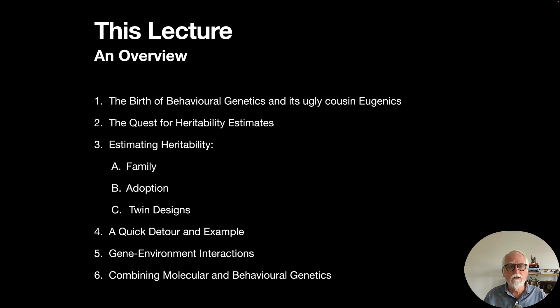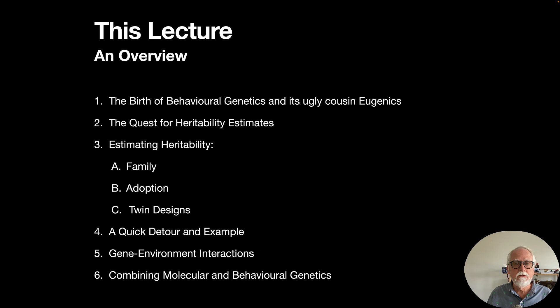In summary, this lecture covered the birth of behavioral genetics and its ugly cousin eugenics, heritability estimates, and the family, adoption, and twin designs used throughout the 20th century to estimate heritability. We took a detour to look at the QIMR genetics group and the Tesser study, discussed gene-environment interactions, and saw how molecular and behavioral genetics are combined in contemporary genomics research. Next in the course we'll turn to culture and then evolution before focusing on specific topics in social neuroscience.